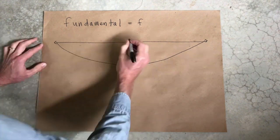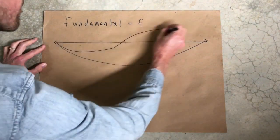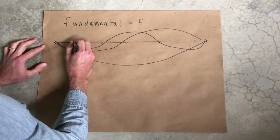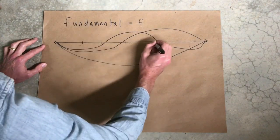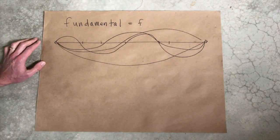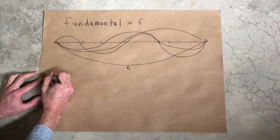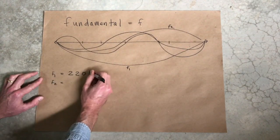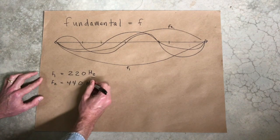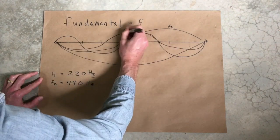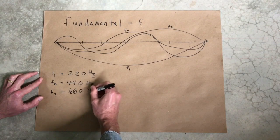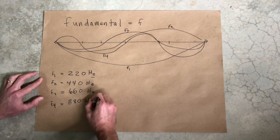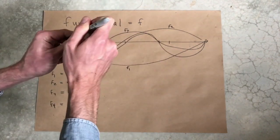But this is not the only vibration that occurs when the guitar string is plucked. It also vibrates in halves, thirds, fourths, etc., all at once. These sub-vibrations produce the harmonics. If the fundamental is 220 Hz, meaning that it vibrates 220 times per second, the second harmonic will be found at 440 Hz — twice the fundamental. The third harmonic will be at 660 Hz, three times the fundamental. The fourth harmonic at 880 Hz, four times the fundamental, etc.